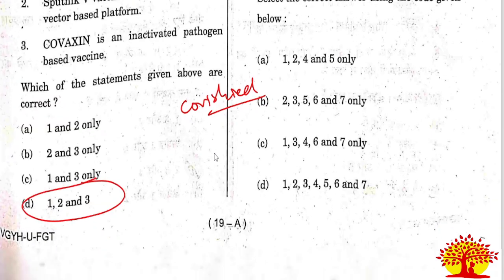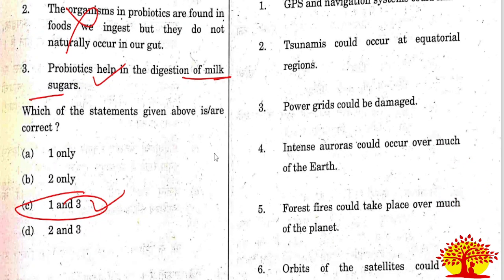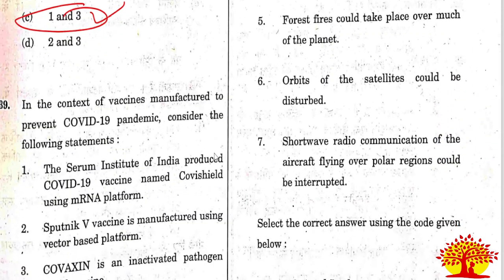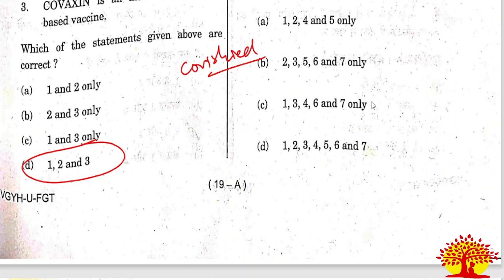Fortieth question: if a major solar flare reaches Earth, which are the possible effects? There are 7 statements given. Option C is the right answer - statements 1, 3, 4, 6, and 7 are correct. Statements 2 and 5 are the wrong statements.